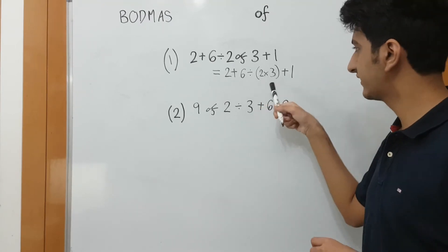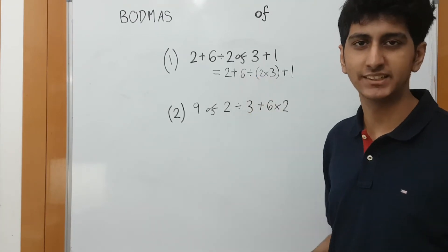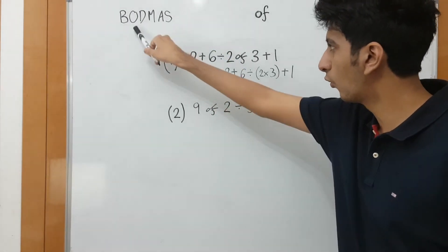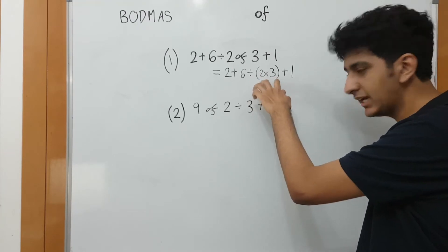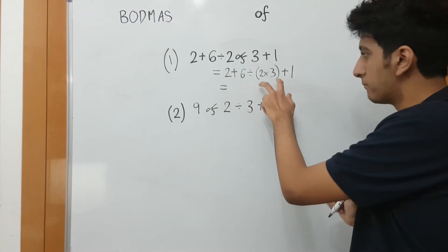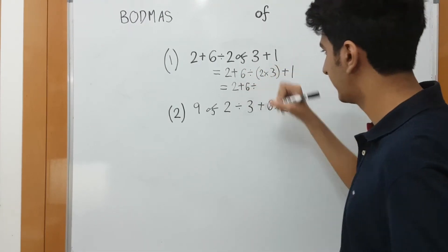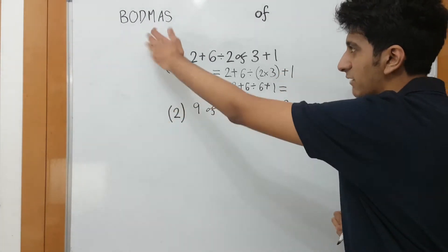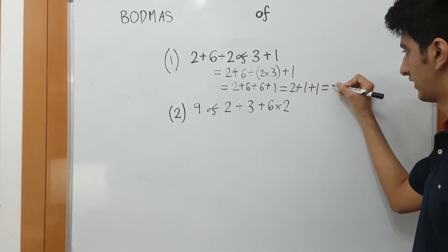We don't do this because of is simply multiplication. But if we replace of with a multiplication sign, then we have to follow this rule. D, M, A, S. But that's not. We have to follow O's rule. O comes before D and M. So, that's why we will put brackets in brackets and we will solve this first. So, when we do this, we will use brackets in the next class. Let's see. So, 2 plus 6 divided by 2 into 3 is our 6 plus 1. Now, D, M, A, S. Solve. 6 divided by 6 is our 1. So, 2 plus 1 plus 1 is our 4.